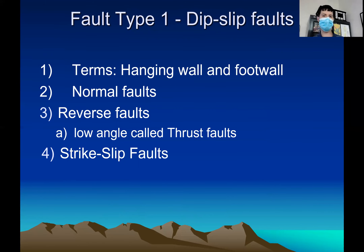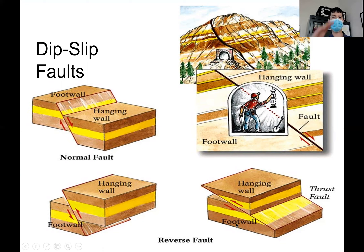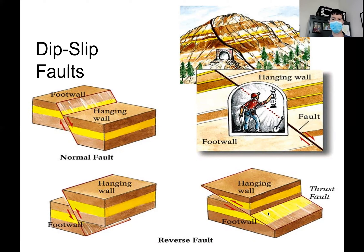We're going to go over normal faults, reverse faults — and a thrust fault is a type of reverse fault — and then the last one is a strike-slip fault. A normal fault is when the hanging wall travels down the foot wall. A reverse fault is when the hanging wall goes up. Normal fault, hanging wall goes down; reverse fault, hanging wall goes up. Normal looks like the ground is sinking; for reverse, it looks like the ground is moving upward. A thrust fault is a special type of reverse fault where the hanging wall goes up at an extreme angle — about 30 degrees or less.